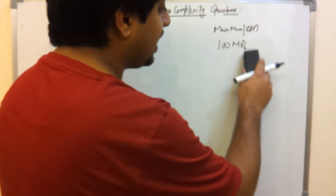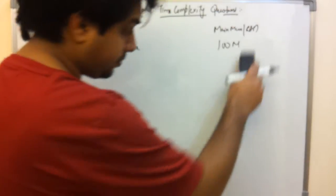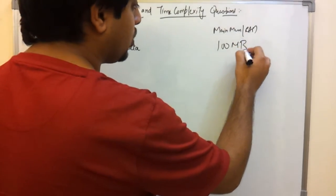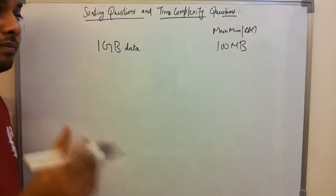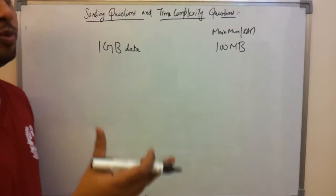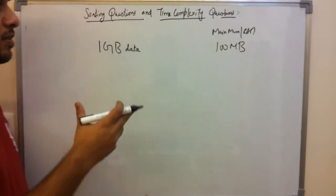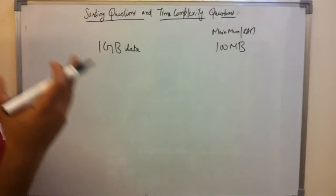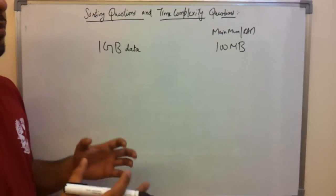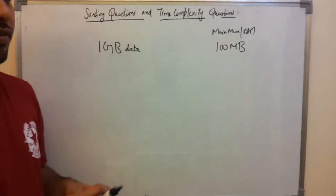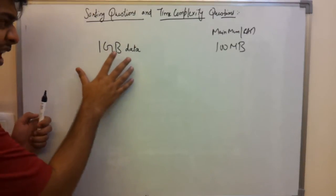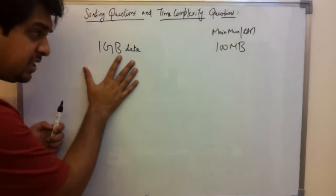Before, we took an array and sorted 10 elements at a time, loading data into main memory where CPU performs all computation. The CPU has registers that compare elements of the array. Now we have 1 GB of data to sort.